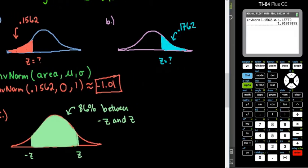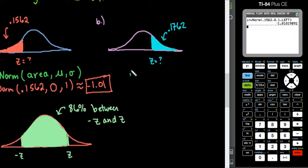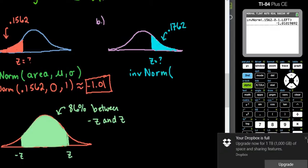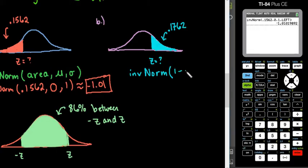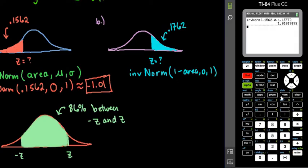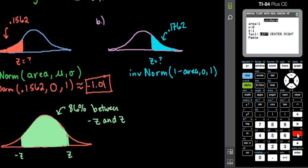For the second one, because the area is to the right, majority of the calculators out there will do the area to the left only. So what we would have to do is inverse norm, and then we would do 1 minus the area, 0, 1. With the TI-83 and TI-84 graphing calculators, you can actually type it in as 1 minus the area. So I would do second, distributions, inverse norm. And then I would do 1 minus my area that is shaded, which is 0.1762. And I can type it in and it will do the math for me.